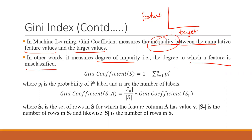The Gini coefficient formula is: 1 minus the summation of pi squared, where pi is the probability of the i-th label and n is the number of labels. You will understand this more with an example, but the main thing to remember is that Gini coefficient measures the inequality between cumulative feature values and target values.